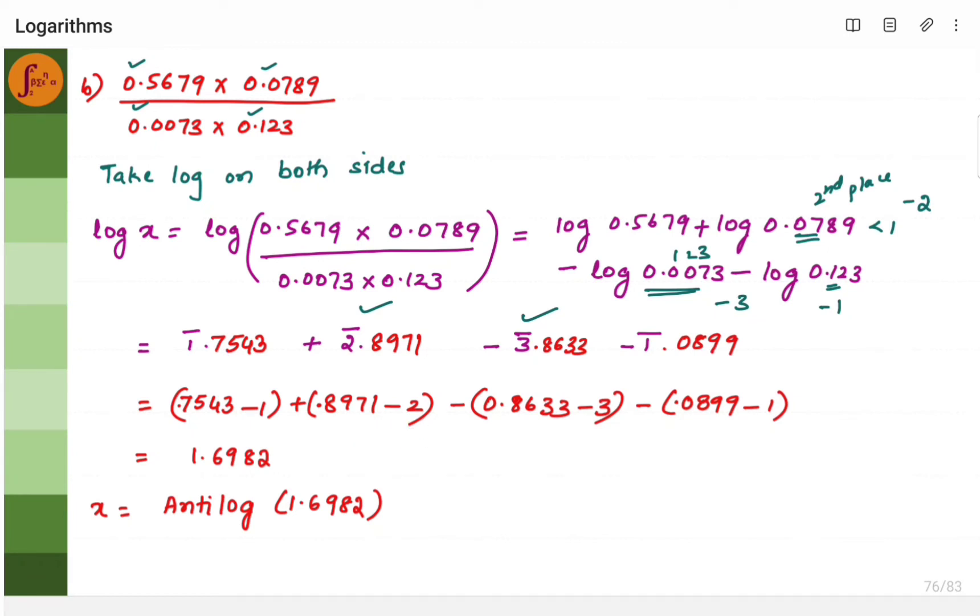So when you have negative values, you will have to split. This will become minus 1. This will become 7543. Minus 2, 8971. 863, minus 3. So split it. Split all of this. And then you add and subtract. I mean, do the simple calculation, you will get this one.